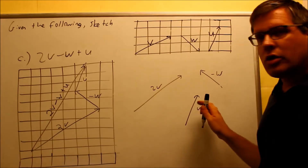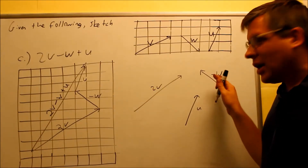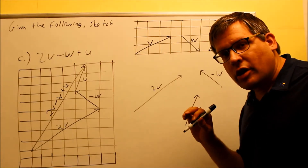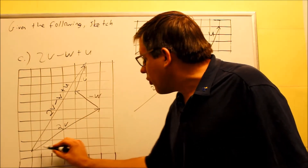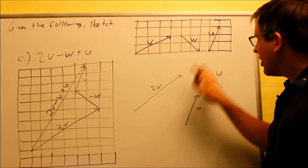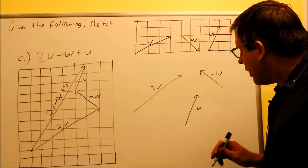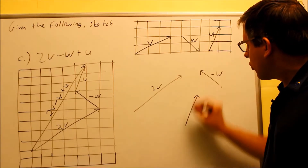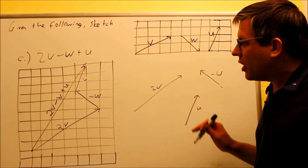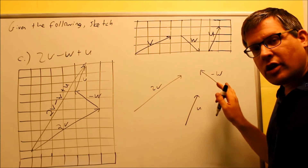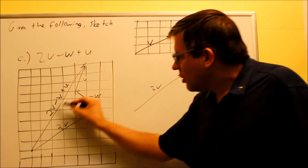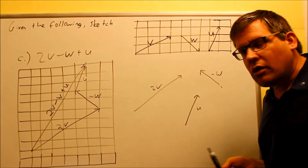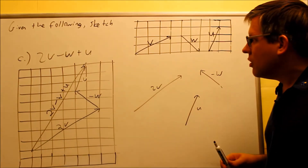This whole line is 2V minus W plus U — my final answer. It doesn't really matter if you rearrange the order. Sometimes depending on how you rearrange it, your final vector might cross over one of the other vectors — that's actually okay. It's still going to go over the same number of boxes and up the same number of boxes. You could start with U, then add negative W, then 2V, and something might cross over itself — that's fine. No matter how you redraw it, you should always end up with the same result.